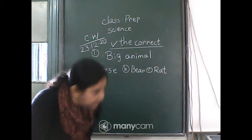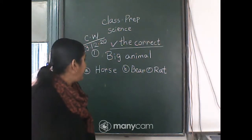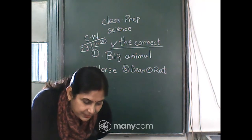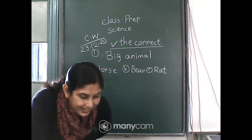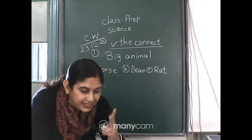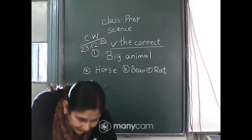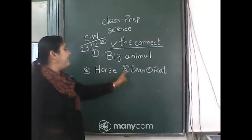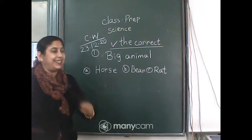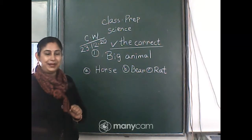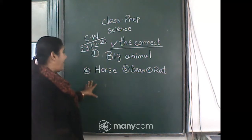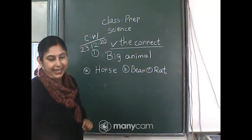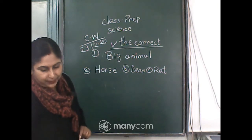Asma says horse — yes, correct. A is correct and another is — yes, A and B both are correct because they are both big animals. Horse and bear — very good. Those who are writing A, those who are writing A and B, or horse and bear, both are correct.